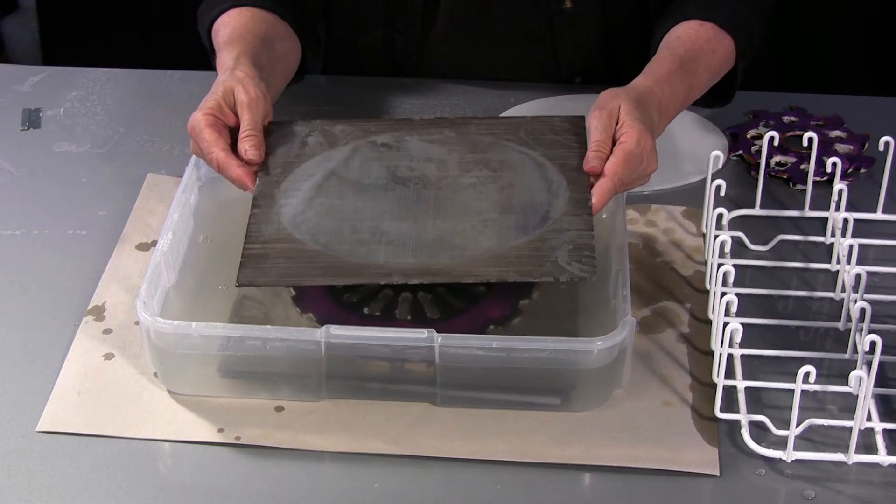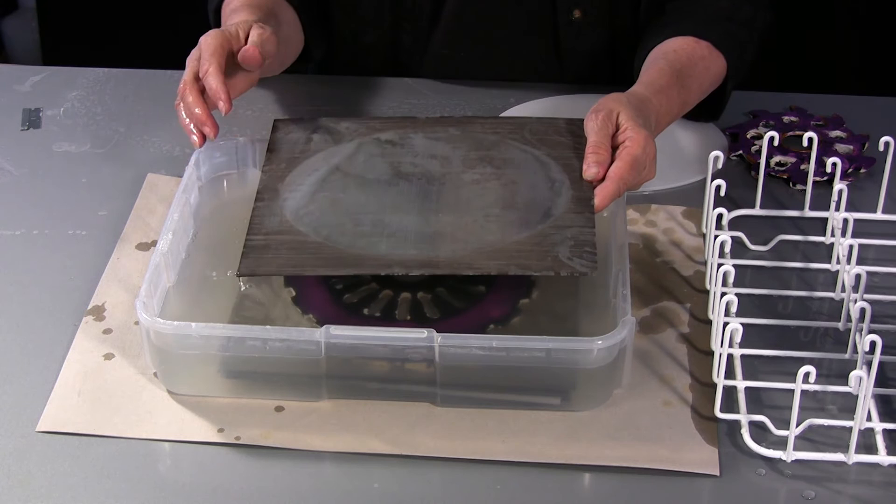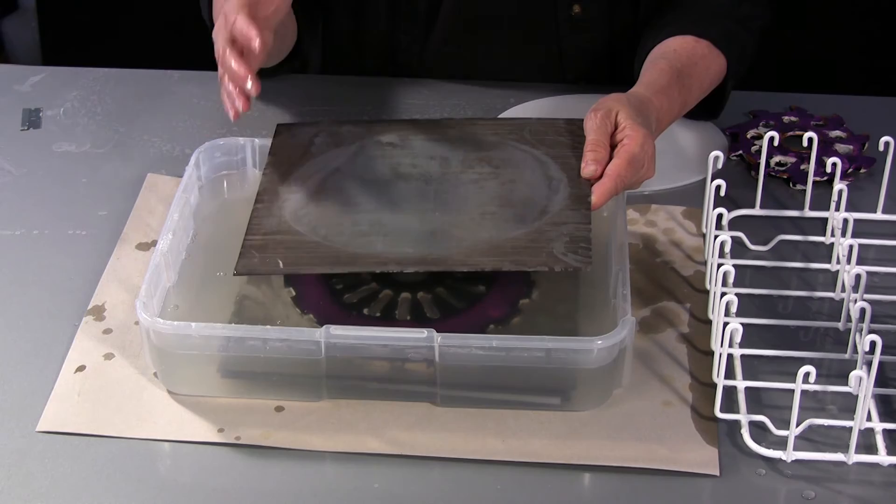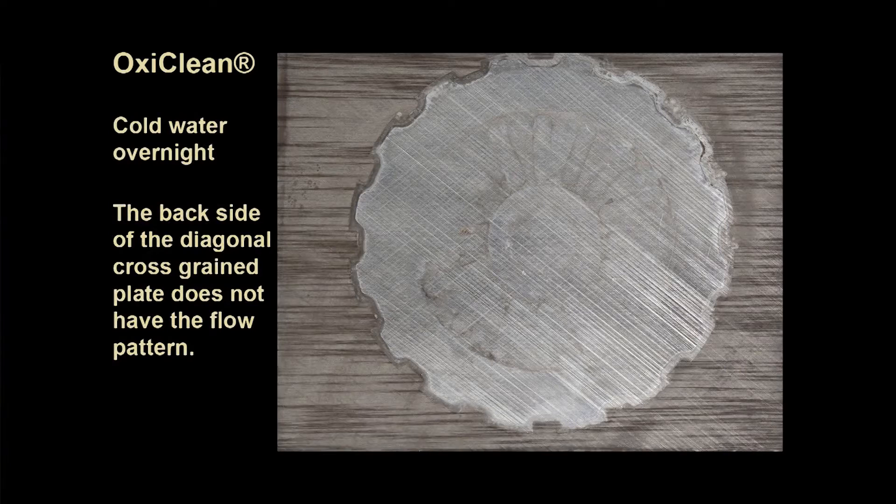Okay, this is a piece that we had done the cross grain on. And again, these marks here, the wave-like forms or leaf forms, are caused from the OxyClean flowing across as the water moved. And then it stopped and the OxyClean stayed in position.